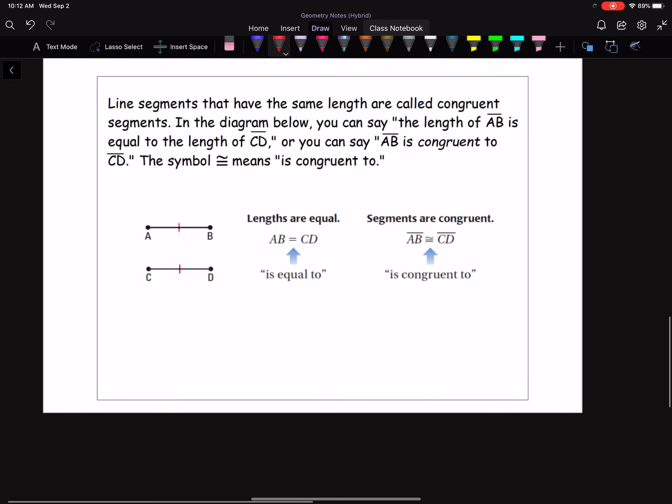Line segments that have the same length are called congruent segments. So this word congruent is going to pop up a lot here this year. Congruent just means the same. In the diagram below, you can say the length of AB is equal to the length of CD. So you can say that they're equal, or you can say that AB is congruent to CD.